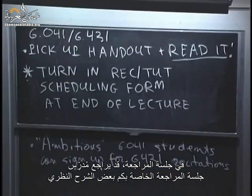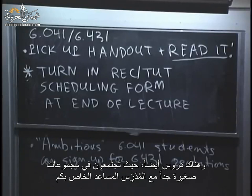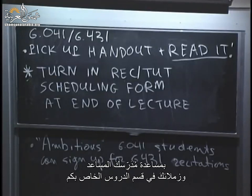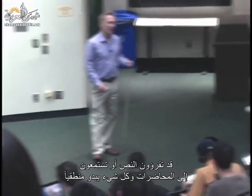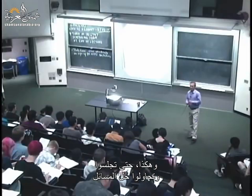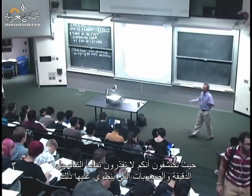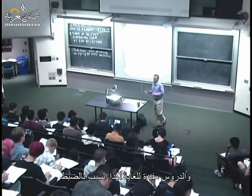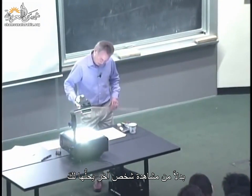In recitation, your recitation instructor is going to review some of the theory and then solve some problems for you. And then you have tutorials where you meet in very small groups together with your TA. In tutorials, you actually do the problem solving with the help of your TA and classmates. Probability is a tricky subject — you may read the text and listen to lectures and everything makes perfect sense, but until you sit down and try to solve problems, you don't appreciate the subtleties. So problem solving is a key part of this class, and tutorials are extremely useful for that reason.